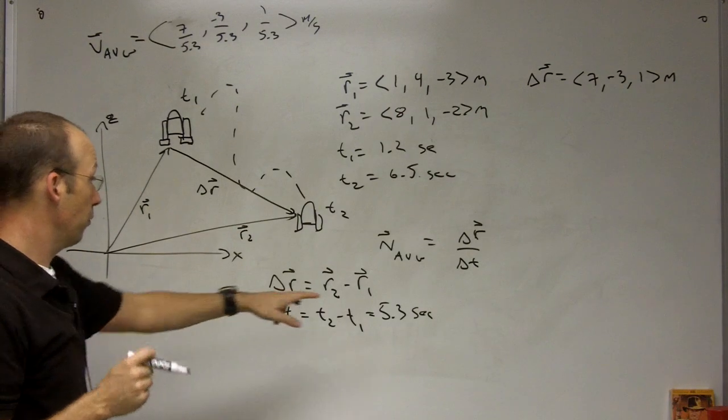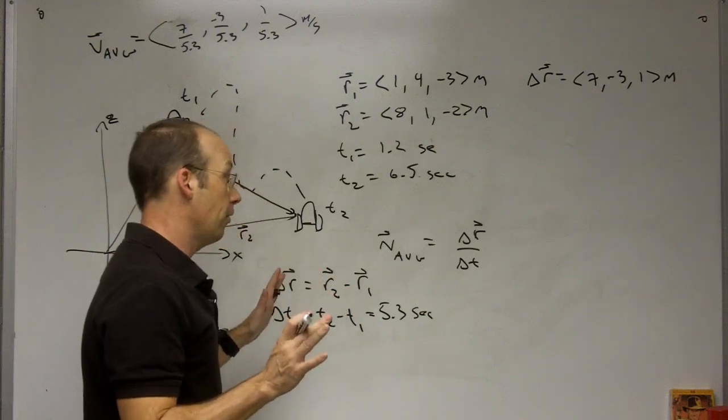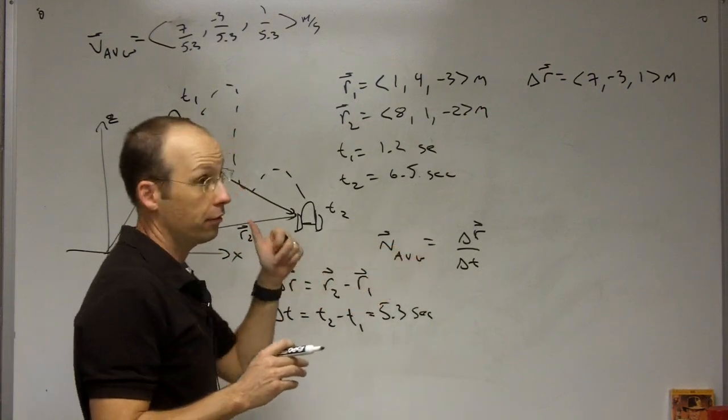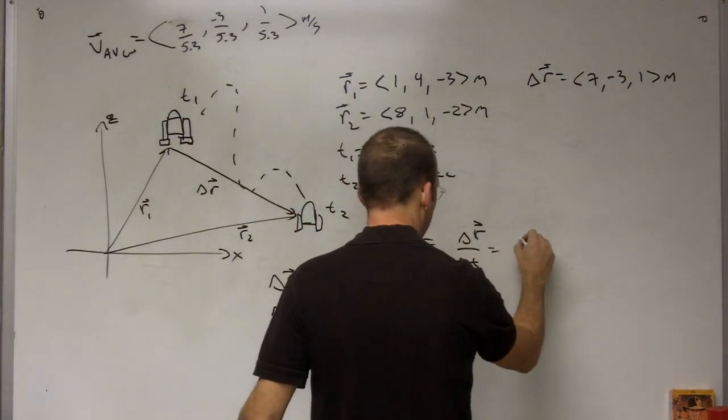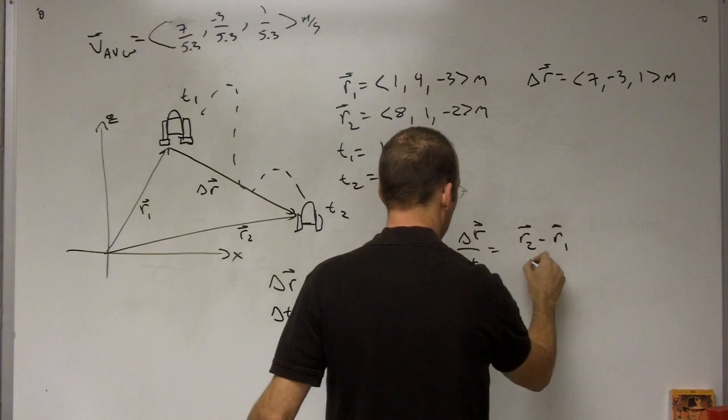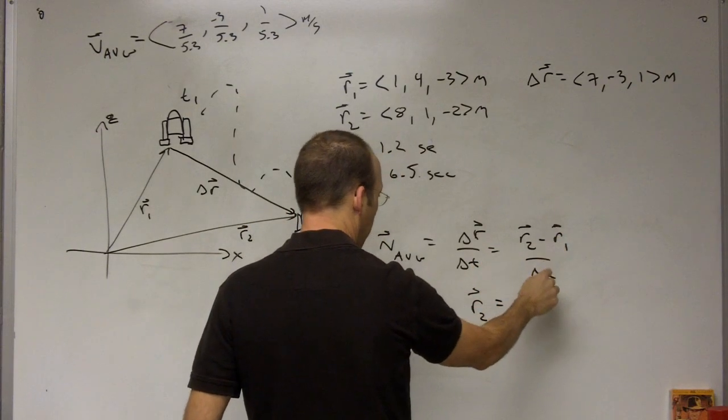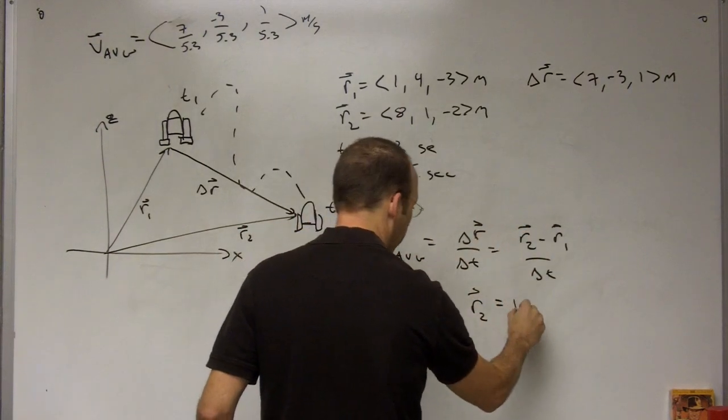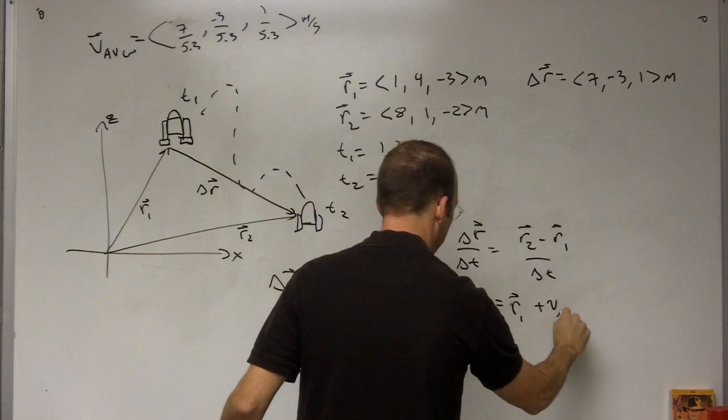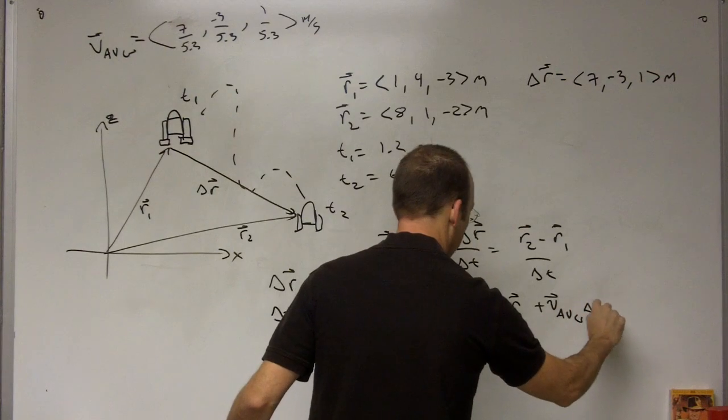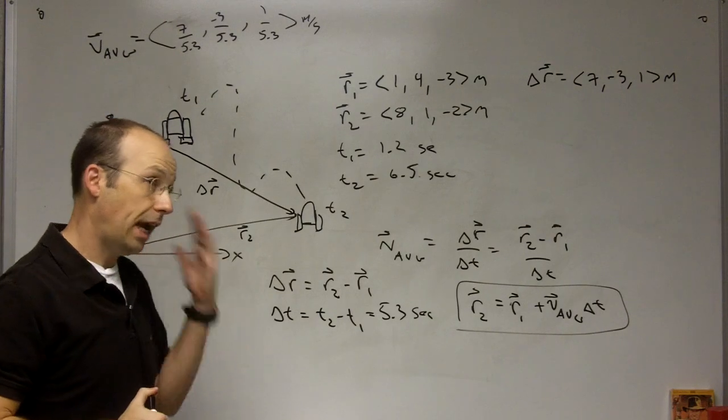And the other thing that we could do is, with this, is sometimes we know the average velocity and we want to find out where the thing is. I didn't do that problem. But if I had, let's say I knew where R1 was and I knew V average, but I didn't know R2. Then I could say this is R2 minus R1 over delta T. And then I can solve for R2. R2 is going to be multiply both sides by delta T and then add R1. So I get R1 plus V average delta T. Now, this doesn't matter if delta T is big or small. All that it matters is that we use the average velocity.